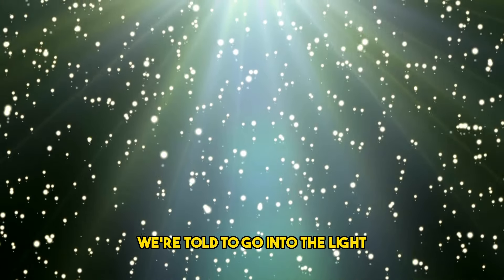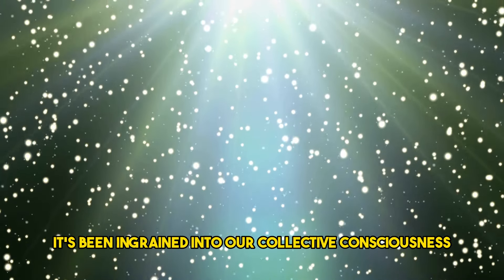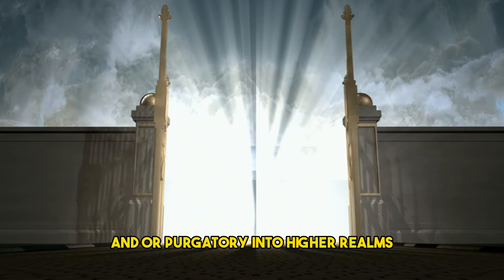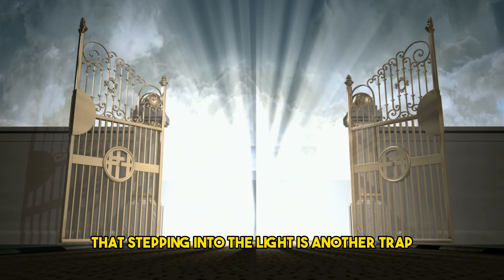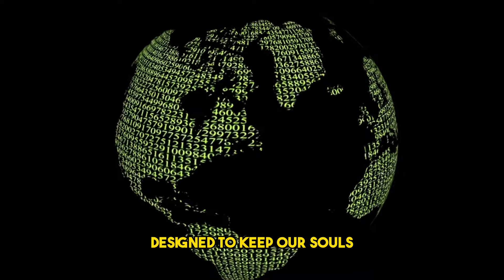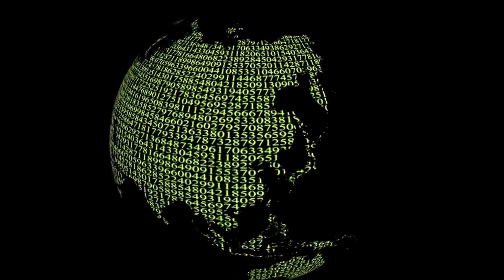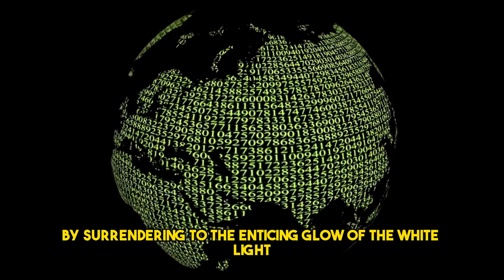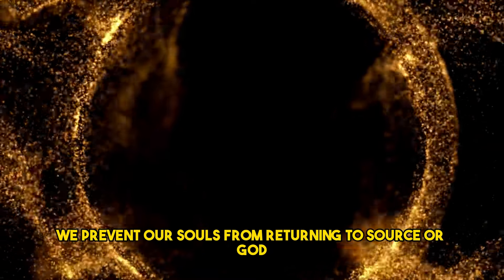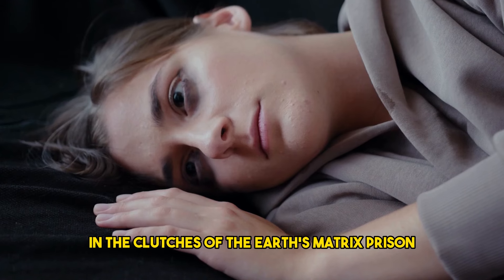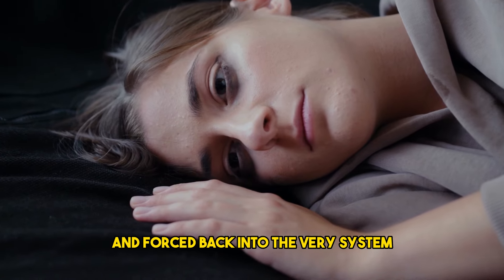When we die, we're told to go into the light. It's been ingrained into our collective consciousness as the escape route from earth into higher realms. But what if I told you that stepping into the light is another trap designed to keep our souls entangled in this earth's matrix? Yes, my friends, the rulers of this world have one last trick waiting for us. By surrendering to the enticing glow of the white light, we prevent our souls from returning to source or God. We become caught in the clutches of the earth's matrix prison, where our soul is recycled and forced back into the very system we are trying to escape from.